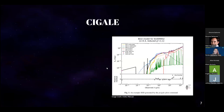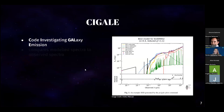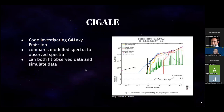To analyze my data, I'll be using a Python-based stellar population modeling software called Code Investigating Galaxy Emission, or CIGALE. CIGALE was primarily developed to compare modeled galaxy spectra to observed spectra. However, it can also simulate data if the user desires. As the data I'm working with is observational, I'll be using CIGALE for its spectral energy distribution fitting properties, which means we look at an object's energy as a function of wavelength.